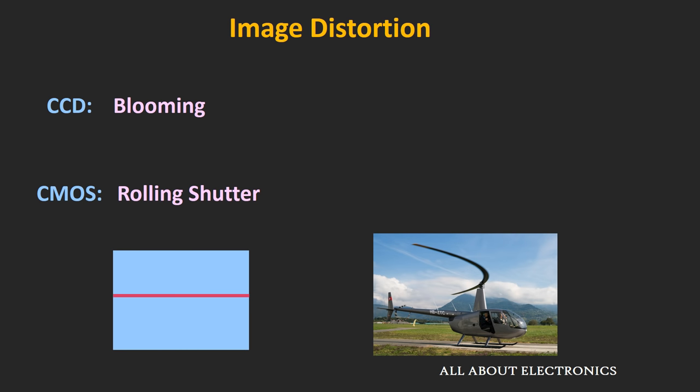As you can see in the case of this helicopter, the wing of the helicopter is straight, but when it is captured by a CMOS sensor it looks like it has a curvature — that effect is known as the rolling shutter effect. While in the case of the CCD sensor, all the pixels are exposed at the same time, so this effect is not seen with CCD sensors. If we want to remove the rolling shutter effect in CMOS sensors, all the pixels should be exposed at the same time, which is known as the global shutter. Nowadays, many CMOS sensors are also coming with this global shutter.